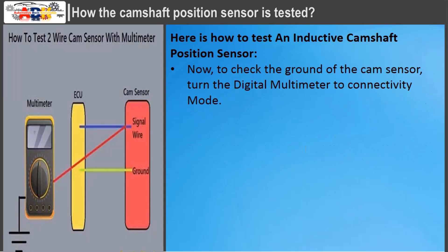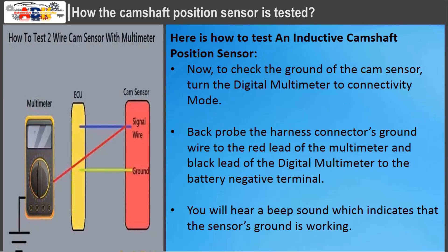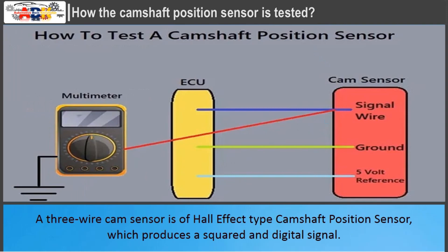To check the ground of the cam sensor, turn the digital multimeter to continuity mode. Back-probe the harness connector's ground wire with the red lead of the multimeter and connect the black lead to the battery negative terminal. You will hear a beep sound, which indicates that the sensor's ground is working.